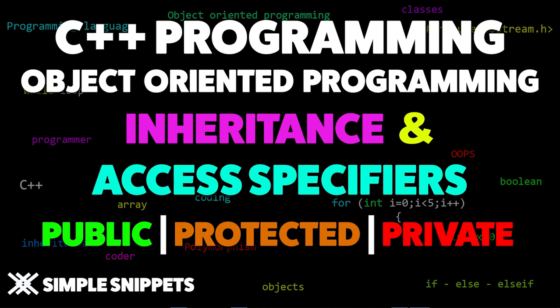In this video tutorial we'll talk more about inheritance, and this is going to be mostly practical. We'll directly go to the code because in the previous video tutorial we discussed the inheritance concept and saw a lot of theory — the different types of inheritance and the modes in which inheritance can occur, that is the access specifiers. We also saw a very basic program example, so now let's take a practical approach and understand how access specifiers work in inheritance.